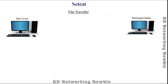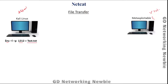Now, how to transfer files between two computers using netcat. For this we have a Kali Linux machine and Metasploitable. The Kali Linux machine will be used as the attacker machine, and Metasploitable as the victim machine. To receive a file, we set the Kali Linux machine in listening mode with 'nc -l -p' followed by the port number, and specify the output file where the received file will be saved.